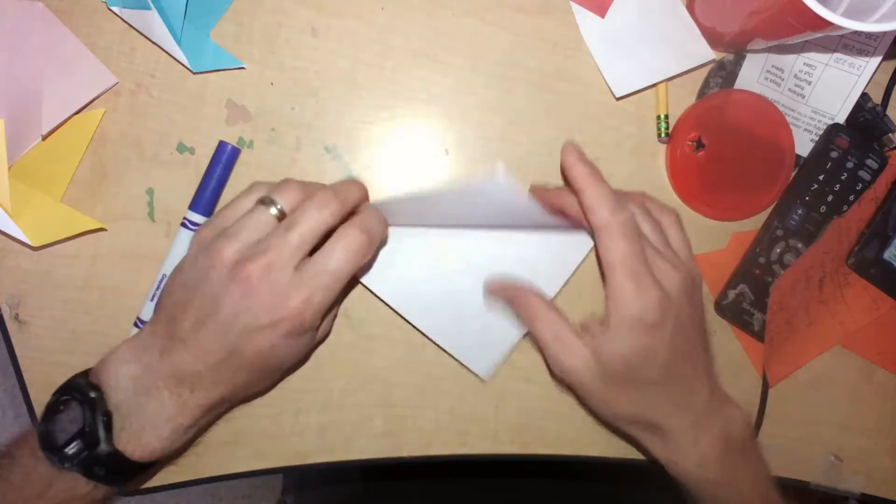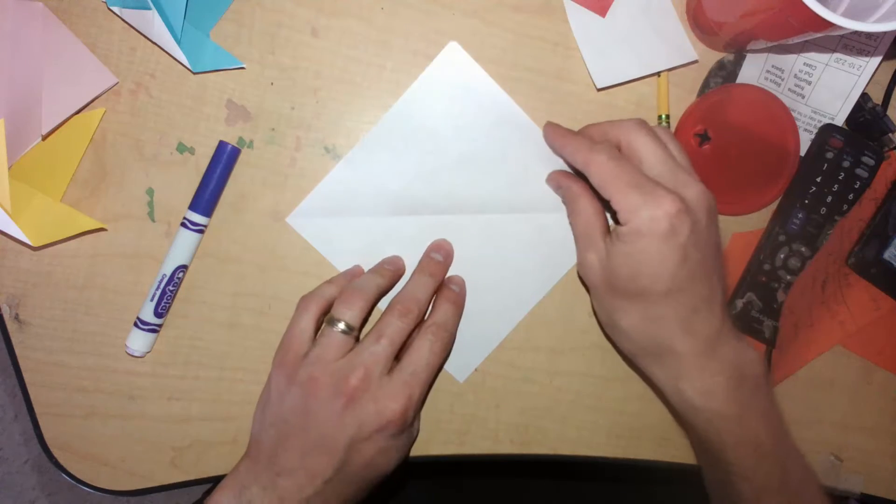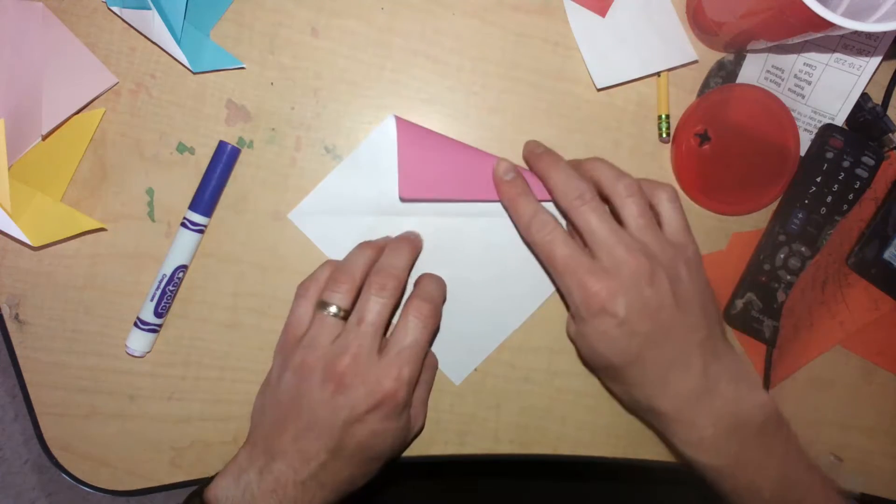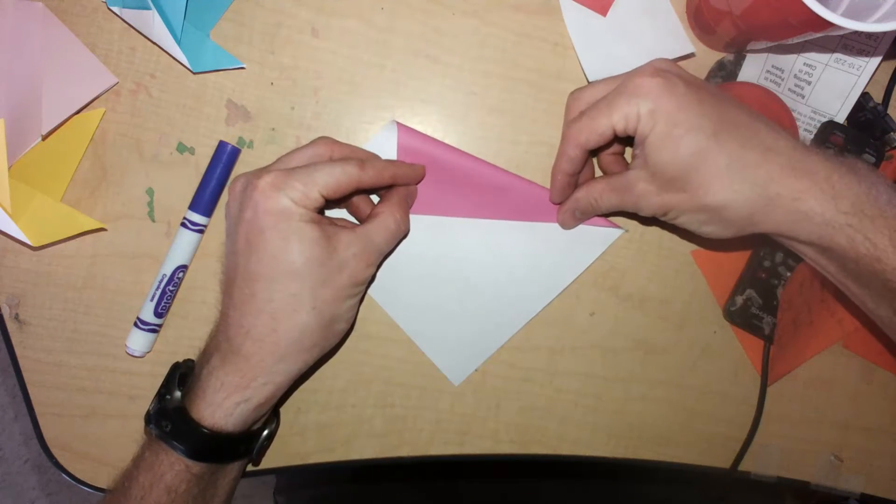And then we're unfolding. Now we're going to bring this edge into that middle crease. So bring this edge here down and try to line it up with that crease.